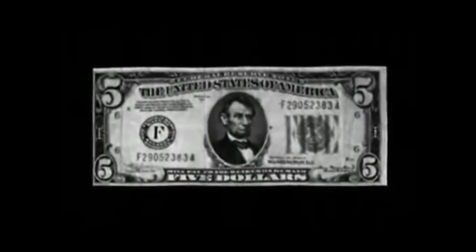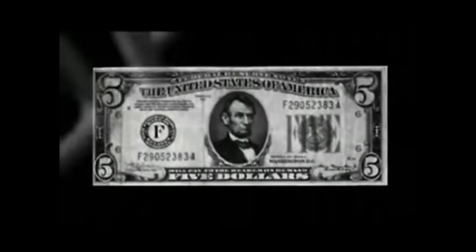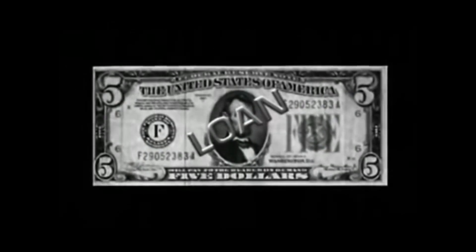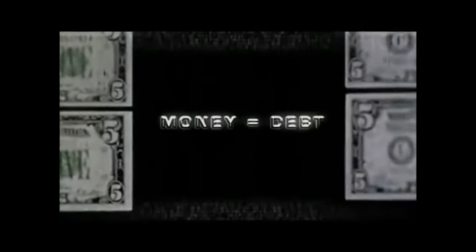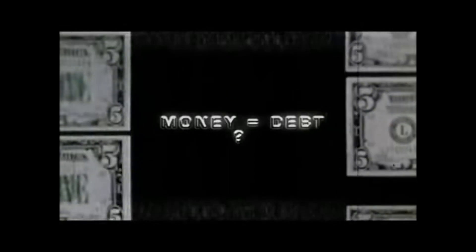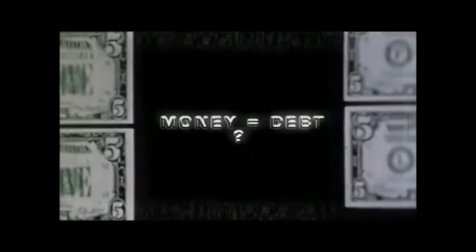Now, government bonds are, by design, instruments of debt. And when the Fed purchases these bonds with money it essentially created out of thin air, the government is actually promising to pay back that money to the Fed. In other words, the money was created out of debt. This mind-numbing paradox of how money or value can be created out of debt or a liability will become more clear as we further this exercise.